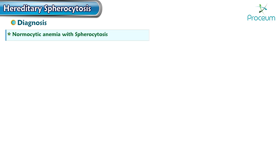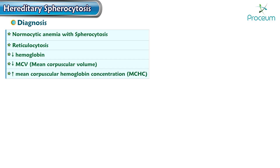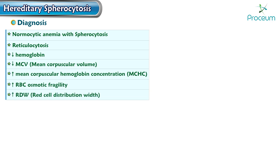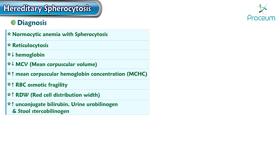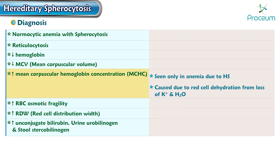Hereditary spherocytosis can be diagnosed by normocytic anemia with spherocytosis, reticulocytosis, decreased hemoglobin, decreased mean corpuscular volume, and an increased mean corpuscular hemoglobin concentration (MCHC). There is also increased RBC osmotic fragility and increased red blood cell distribution width (RDW), as well as increased unconjugated bilirubin, urine urobilinogen, and stool stercobilinogen. Increased MCHC is seen only in hereditary spherocytosis due to red blood cell dehydration from loss of potassium and water.